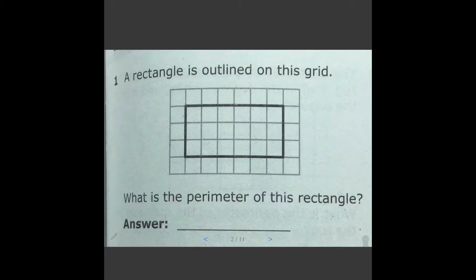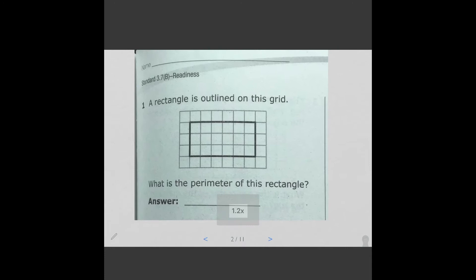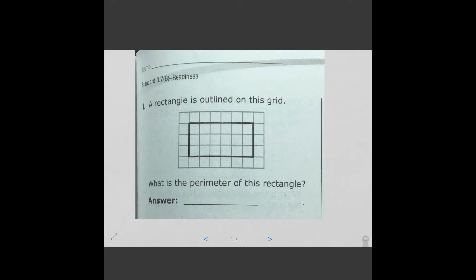So, the one that we're going to do together, it's right here. A rectangle is outlined on this grid. What is the perimeter of this rectangle? So, very simple. So, what you would start with is basically counting to see how many square units do you have on each side.